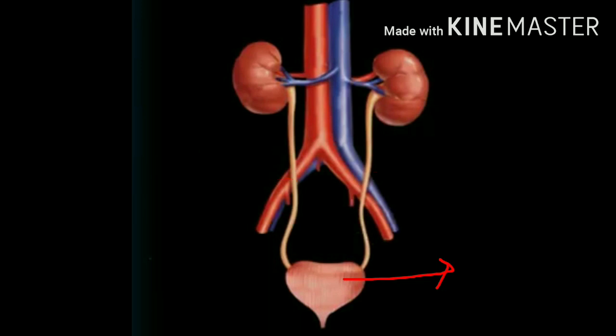This bladder is a muscular bag-like structure which stores urine until it is released out of the body. Once the urinary bladder is full, the urethra, which is a small tube in the lower part of the urinary bladder, opens and urine is released out.